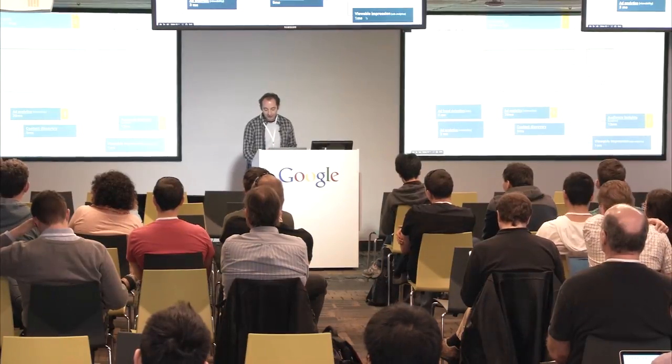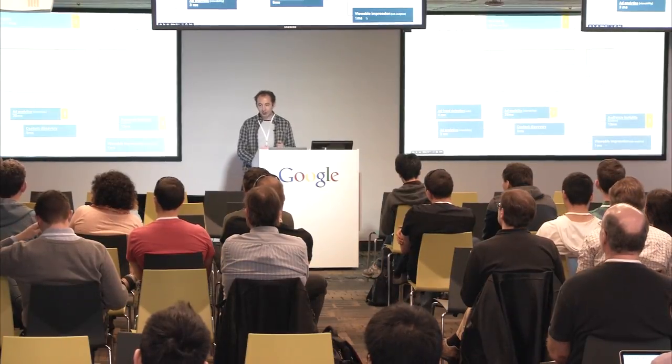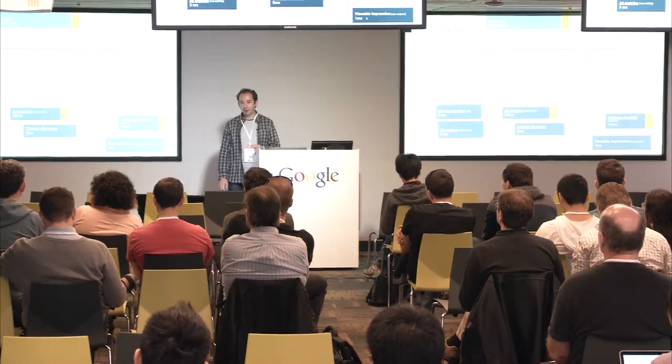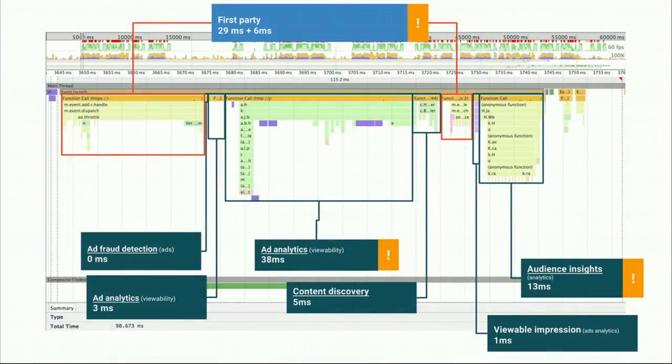This particular third party, whenever there is a scroll event, takes note of it and schedules a timer to do the heavy work after the fact. Thanks to the Blink scheduler, this actually helps because we try to avoid firing timers while the user is scrolling, which helps in terms of user experience.